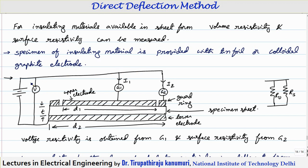Whenever you give the supply, two currents will pass. One current I1 comes through galvanometer 1, through the upper electrode, passes through the insulator and goes down — this current passes through the volume. The second path is through galvanometer 2, passing along the surface to the guard ring electrode and returning — this I2 is the leakage current through the surface. Under normal conditions without the guard ring, the resistance measured would be the parallel combination of volume resistance and surface resistance.